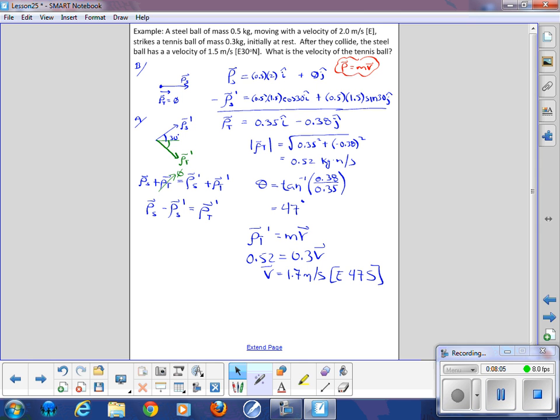And I get 1.7 meters per second. And the direction on that would be heading east, 47 degrees south. So therefore, the velocity is 1.7 meters per second east, 47 degrees south. So there we are. We're using vectors to solve the problems at hand.